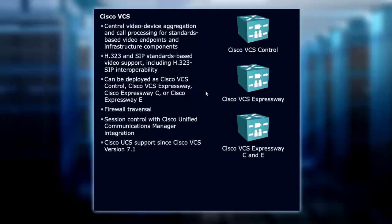Depending upon your endpoints and your connectivity, you may be running one or the other or both. With our VCS servers, we have VCS Control, VCS Expressway, and then we have the Expressway both Core and Edge — that's what the C and the E stand for.